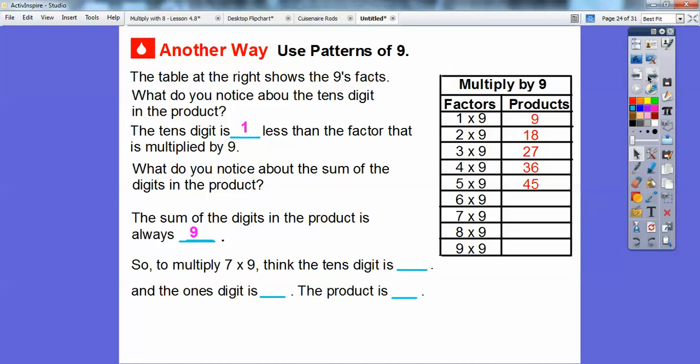So to multiply seven times nine, think that the tens digit is one less than this one. So it would be six. And then the ones digit is going to be what adds to six to make nine. Six plus three would be nine. So the ones digit would be three. So the product would be 63 right there.